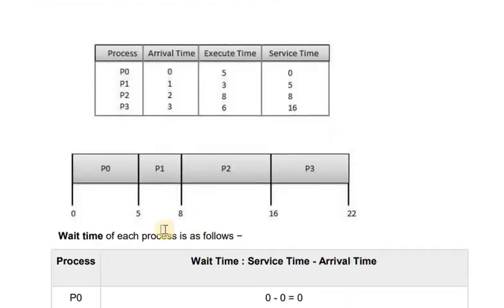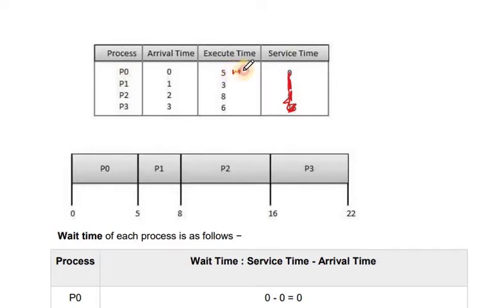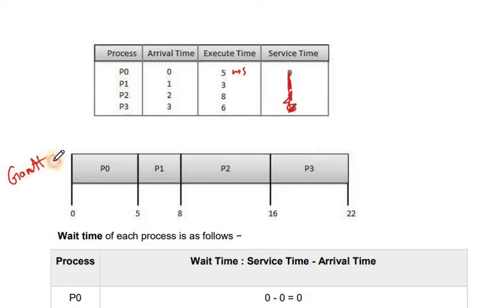Here we are given a problem. The processes are P0, P1, P2, and P3. The arrival times are 0, 1, 2, and 3 milliseconds respectively. The burst times are: P0 is 5 milliseconds, P1 is 3 milliseconds, P2 is 8 milliseconds, and P3 is 6 milliseconds. Now we have the service times, so we will go to the Gantt chart.